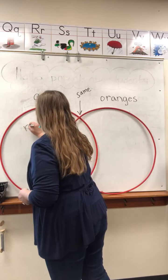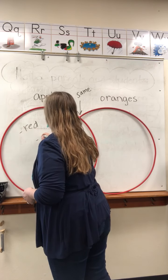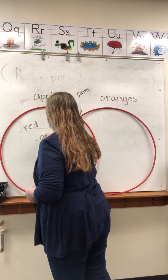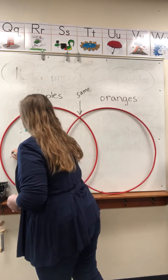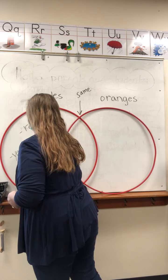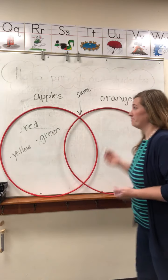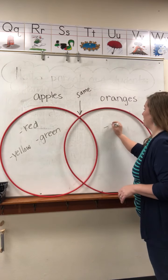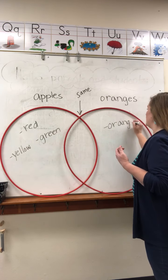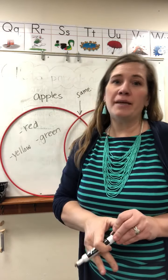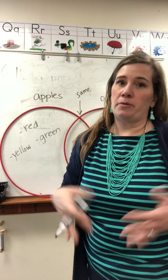Apples — they can be red, they can be green, they can be yellow. What about oranges? I've only seen an orange that is orange. Now maybe they're not quite dark orange when they're ripening, but oranges are typically orange.